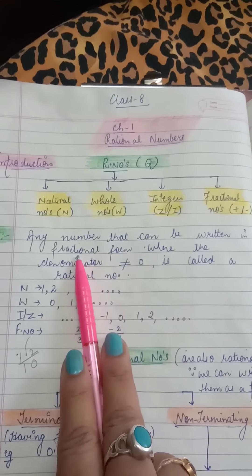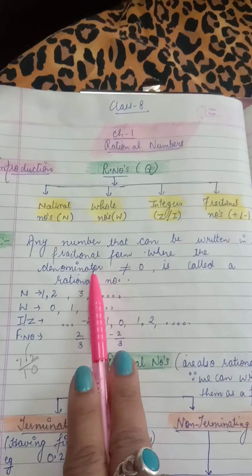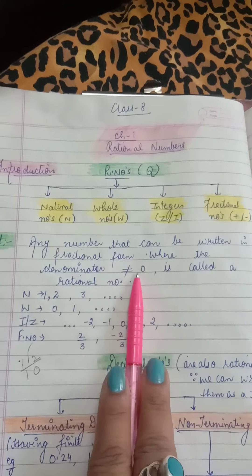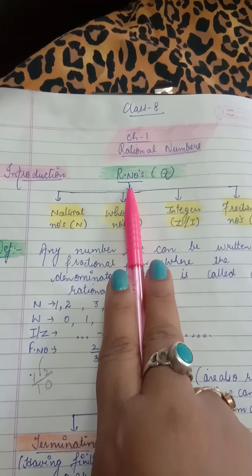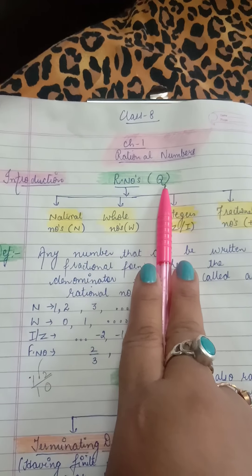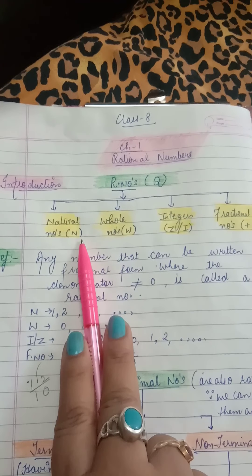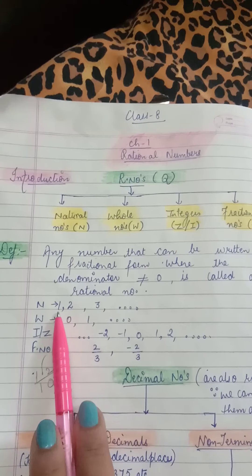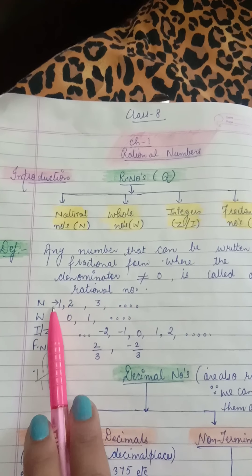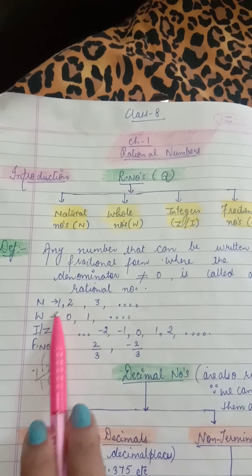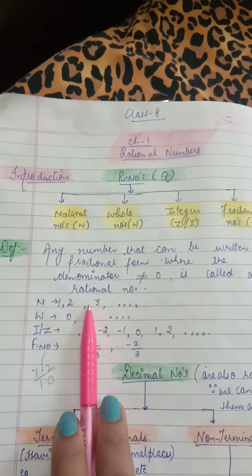The definition: any number that can be written in a fractional form where the denominator is not equal to 0 is called a rational number. So any number you write in fractional form is a rational number, as long as the denominator is not equal to 0. A rational number is denoted by capital Q. For example, a natural number like 1 can be written as 1 upon 1, so it becomes a rational number.